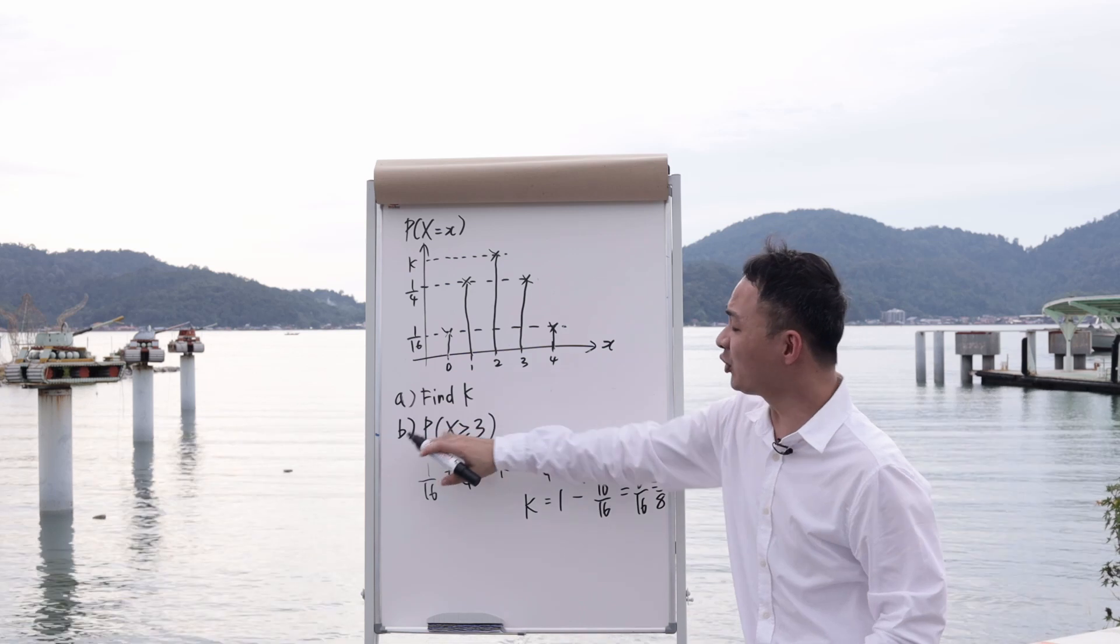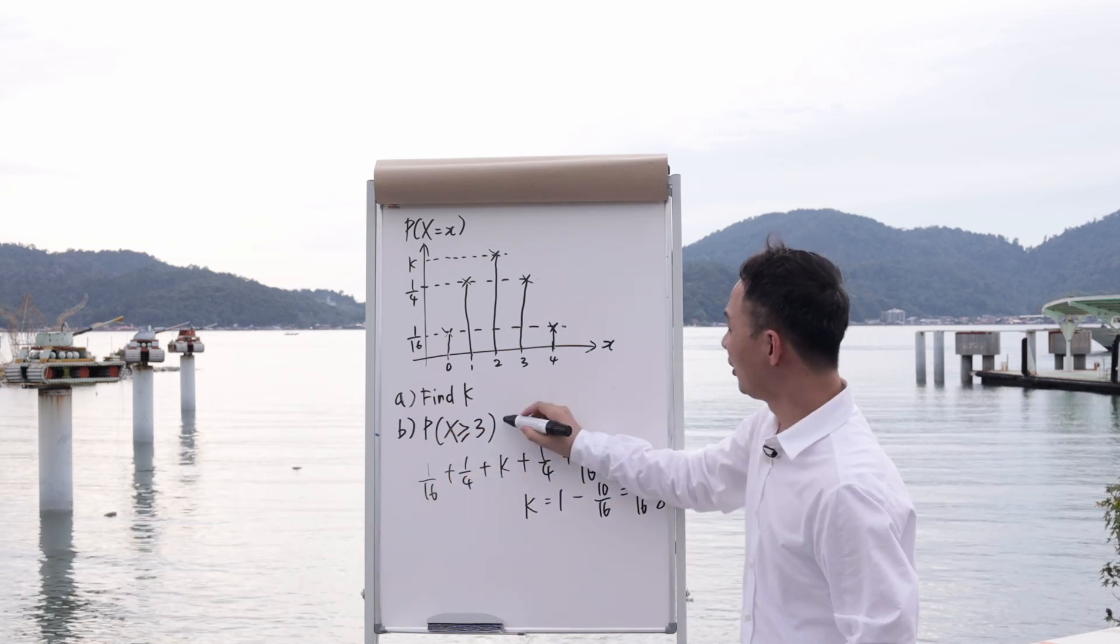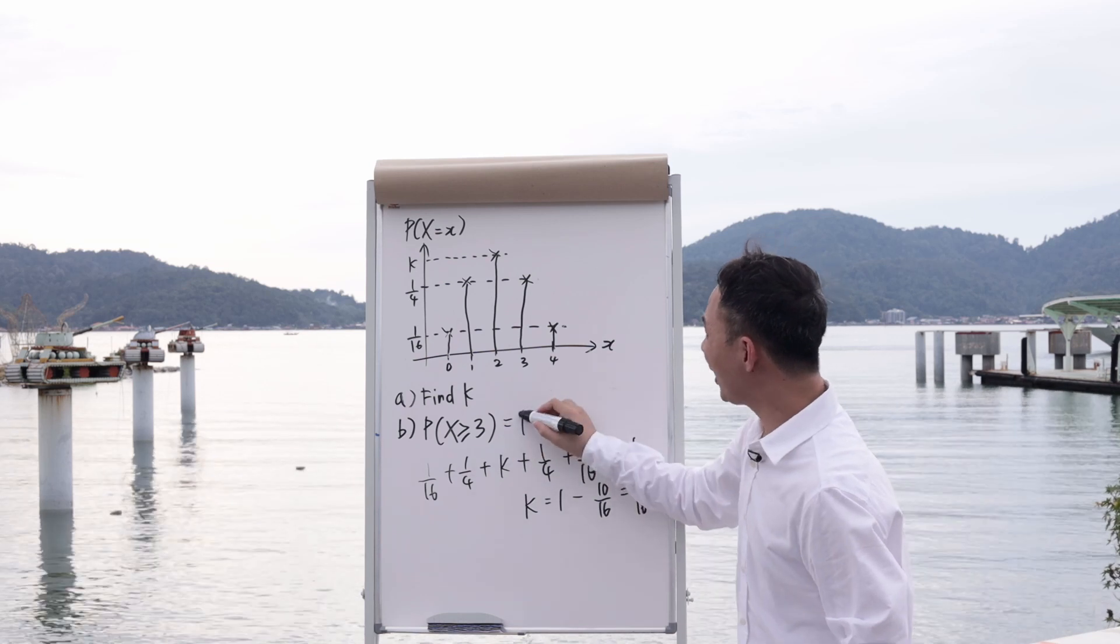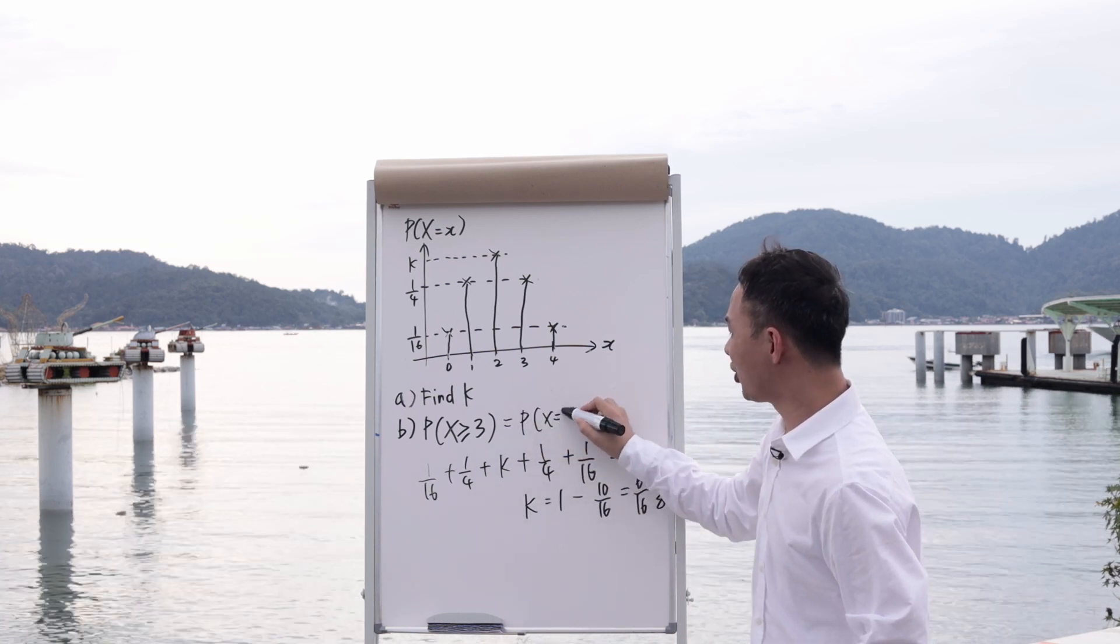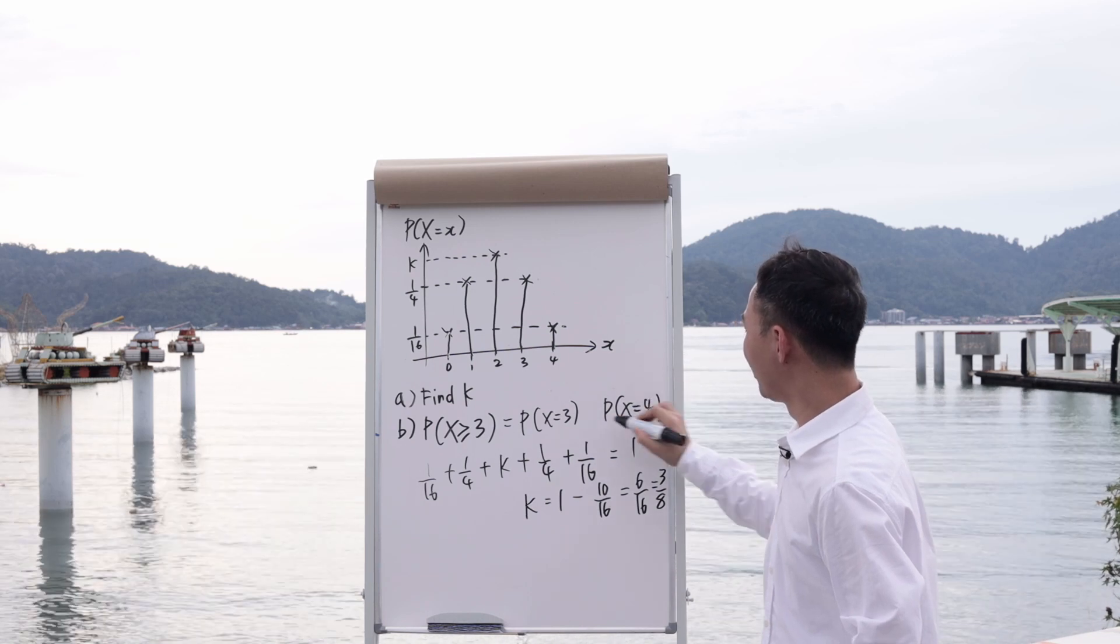The second thing is you need to find the probability when x is bigger or equal to 3. So therefore, what I will get is x must equal to 3 and also x must be equal to 4. And then